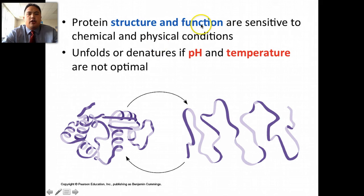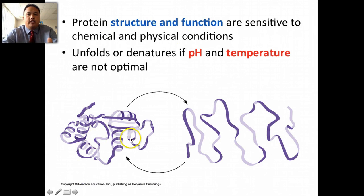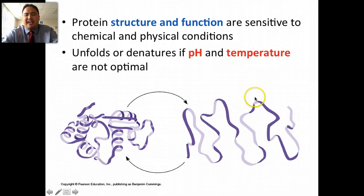The structure and function of proteins are very sensitive to conditions. If the pH or the temperature is not perfect, a protein denatures — basically unfolds or falls apart. If it's too acidic, too basic, or the temperature is too high or too low, a protein can denature.